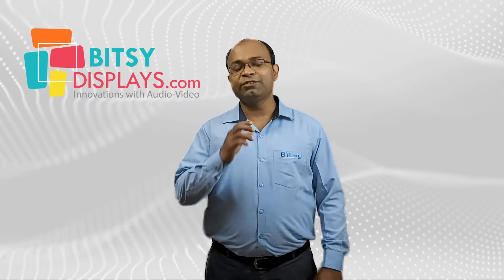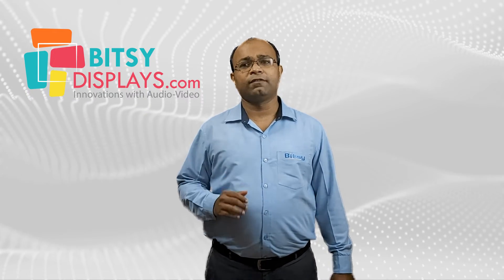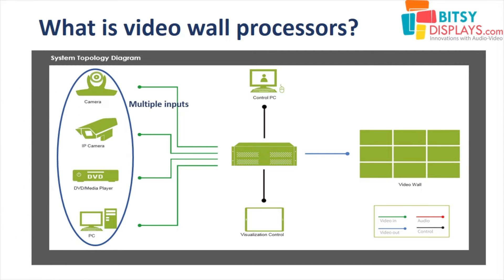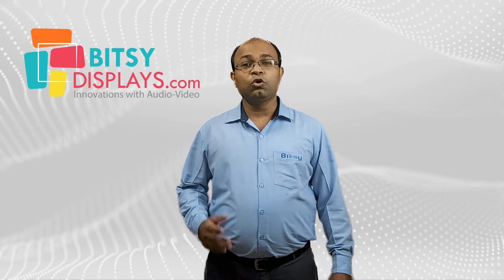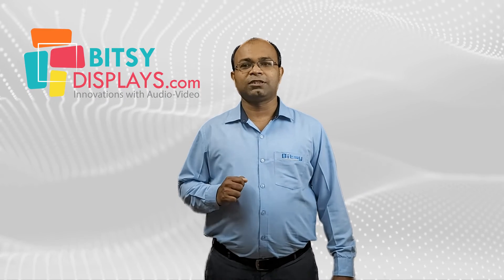But if the matrix of the video wall is complex, then a processor comes into play. If we need flexibility, then we need to go for a video wall processor. So what is a video wall processor? In short, if you have a number of inputs and different types of inputs like SDI, HDMI, DVI, etc., and you want to do some processing of video inputs and show them on one big display, then you need a video wall processor.